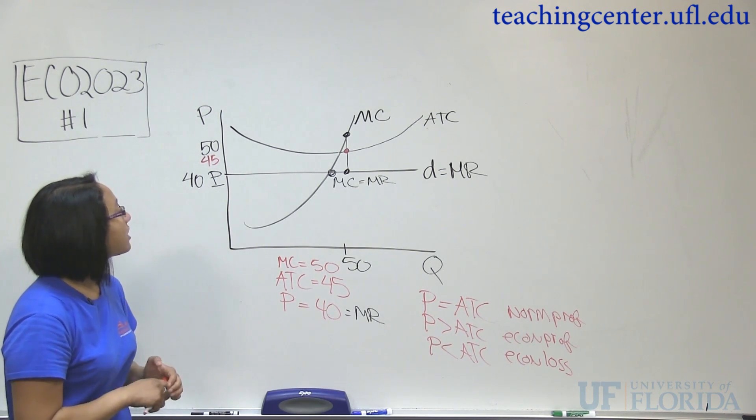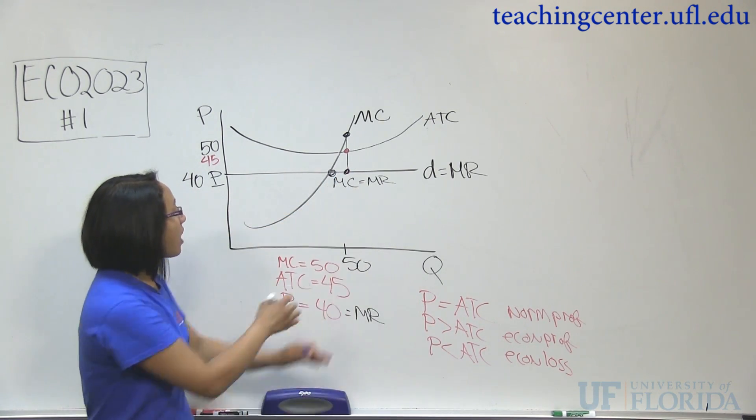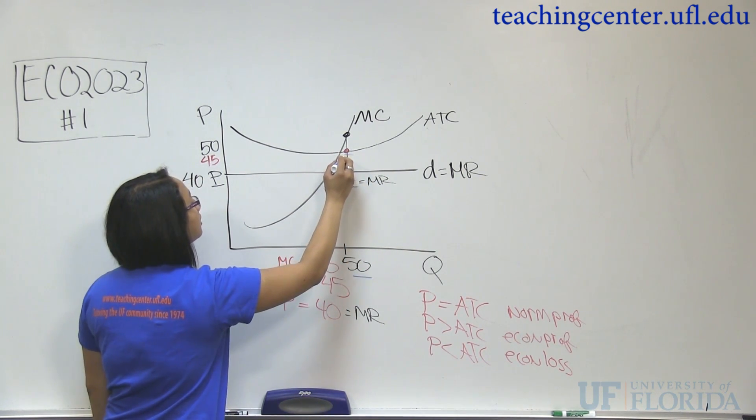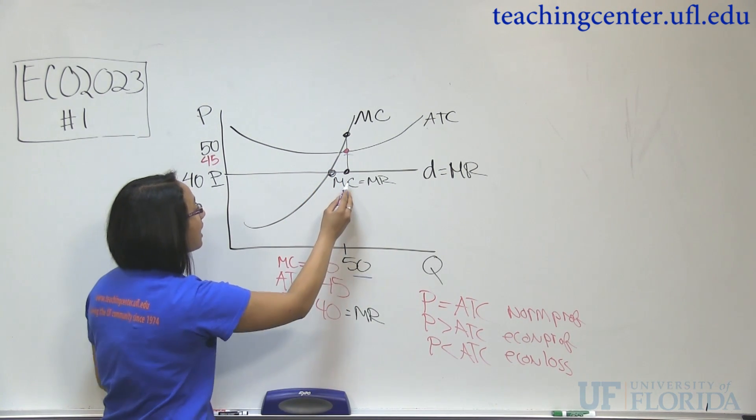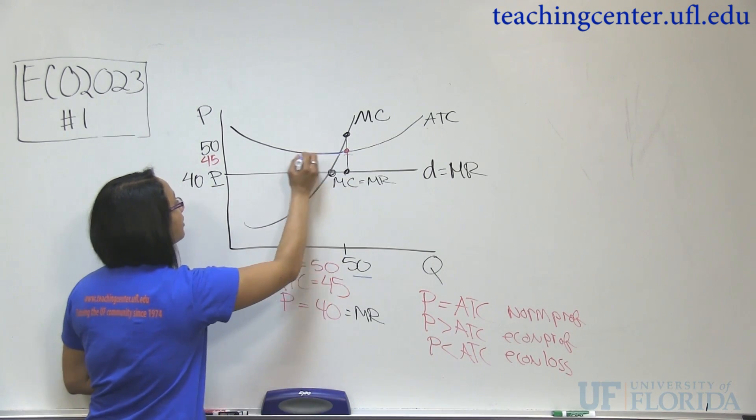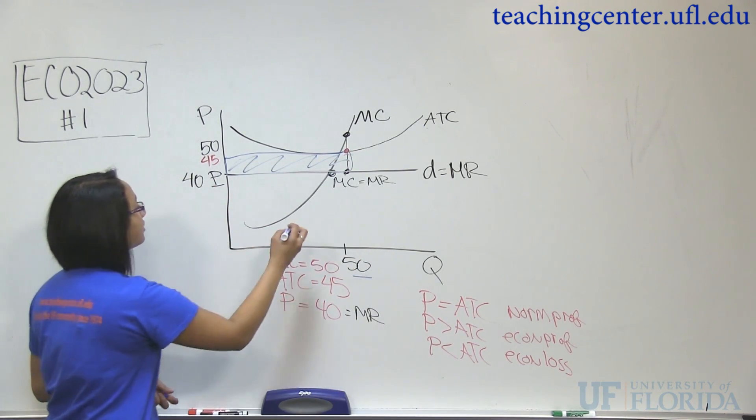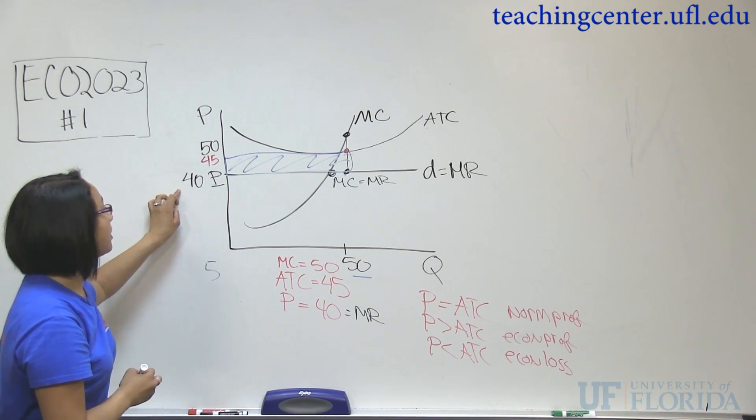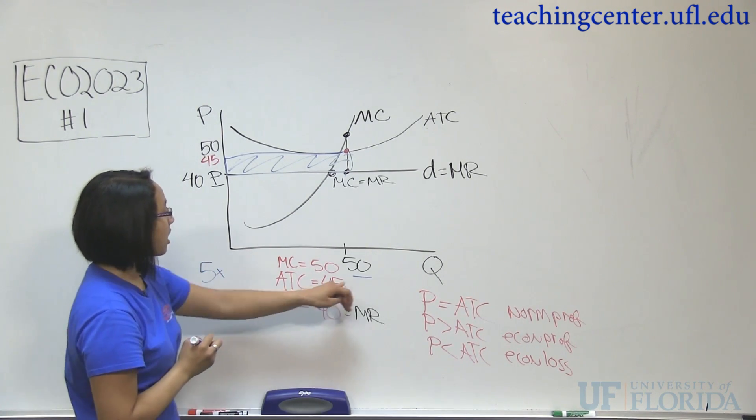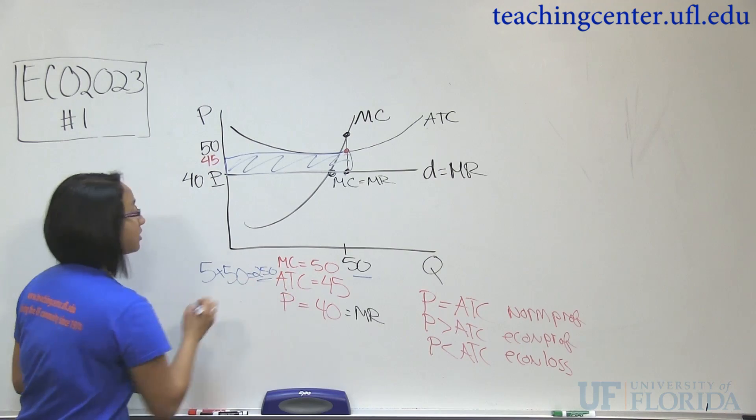Now, this question could also ask for what is the area of the economic loss. And you can do that graphically. Where your quantity intersects your average total cost curve is where your average total cost is. So, we have our average total cost here. And where your quantity is at your demand curve is where your price is. So, we have a price of 40. If we take this entire area of the rectangle and do base times height. So, height here is 5. The difference between our ATC and our price, 45 and 40. Times our quantity of 50 for our base. That would be 250 as our economic loss.